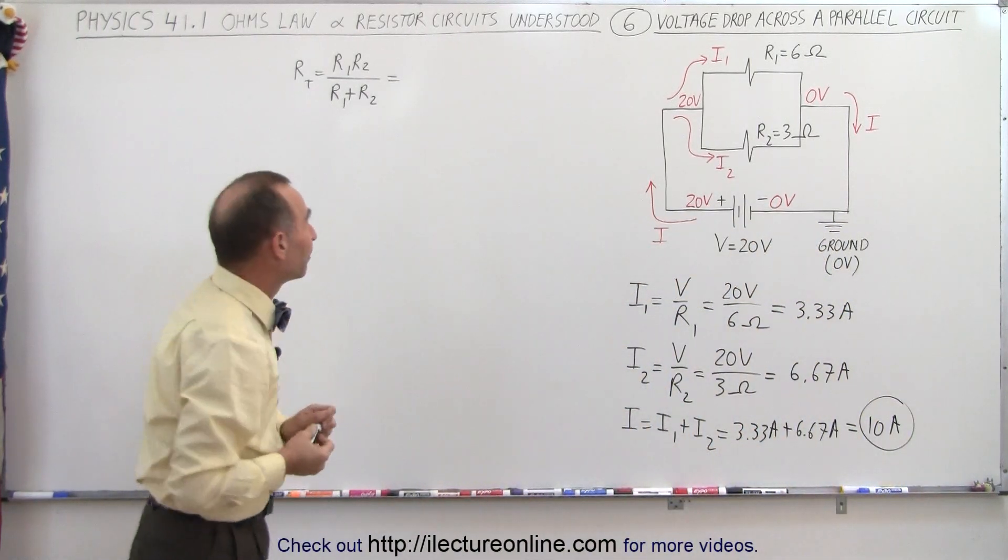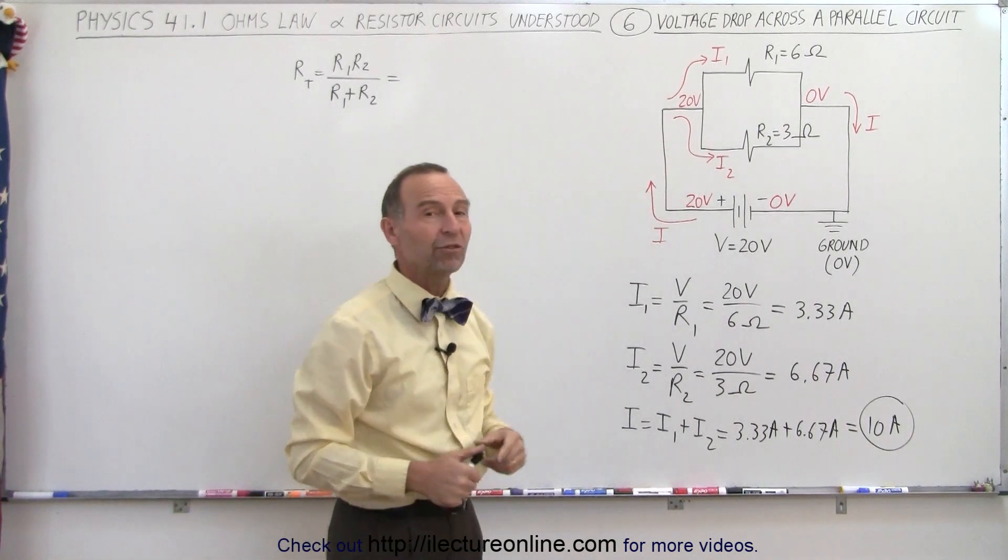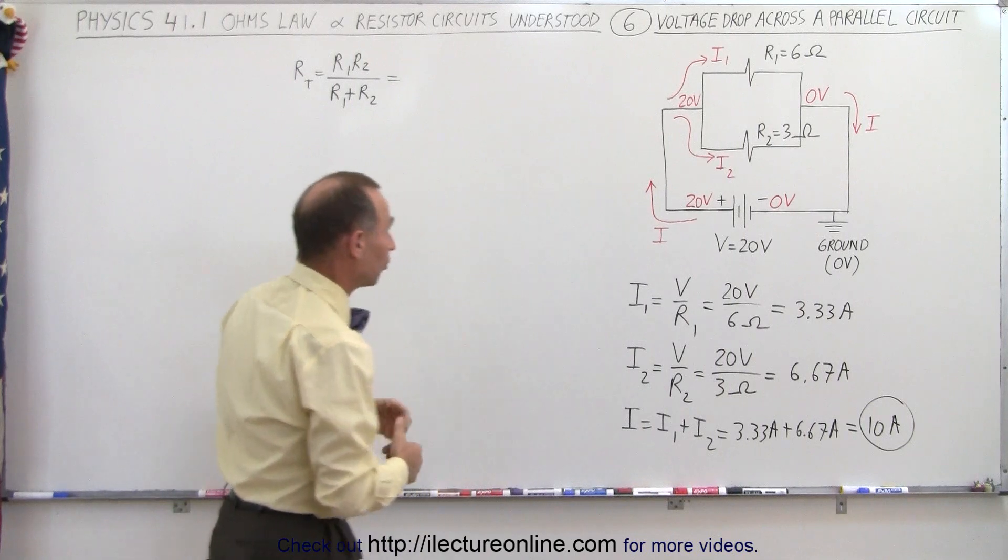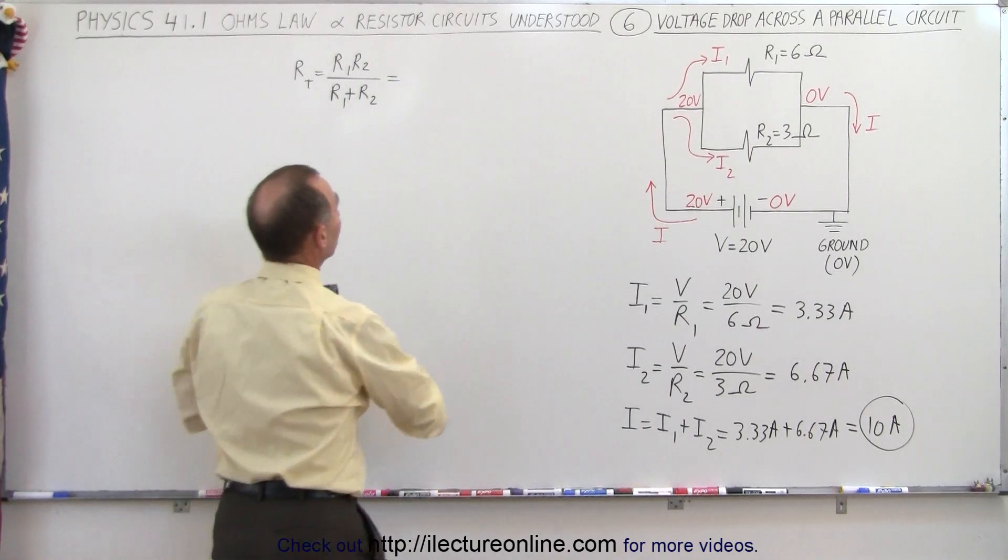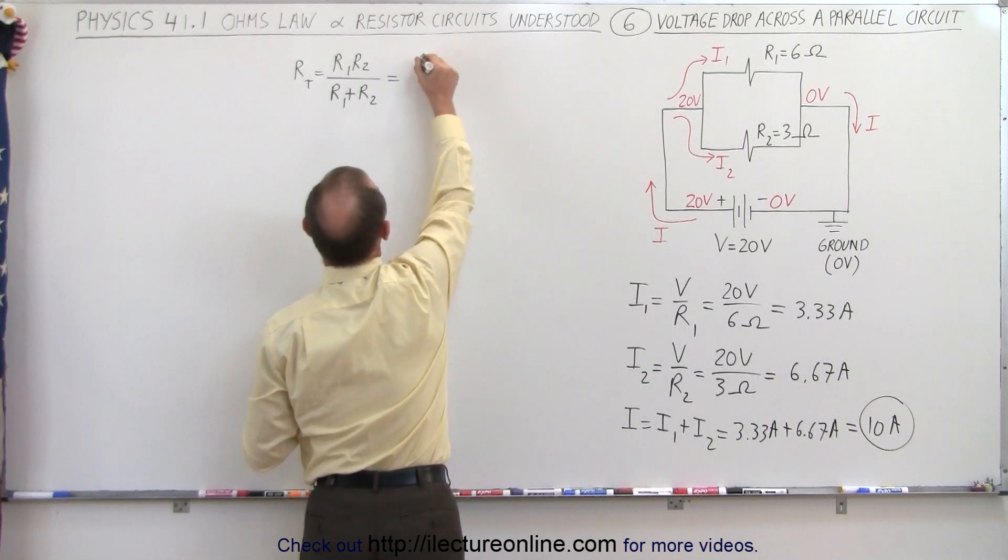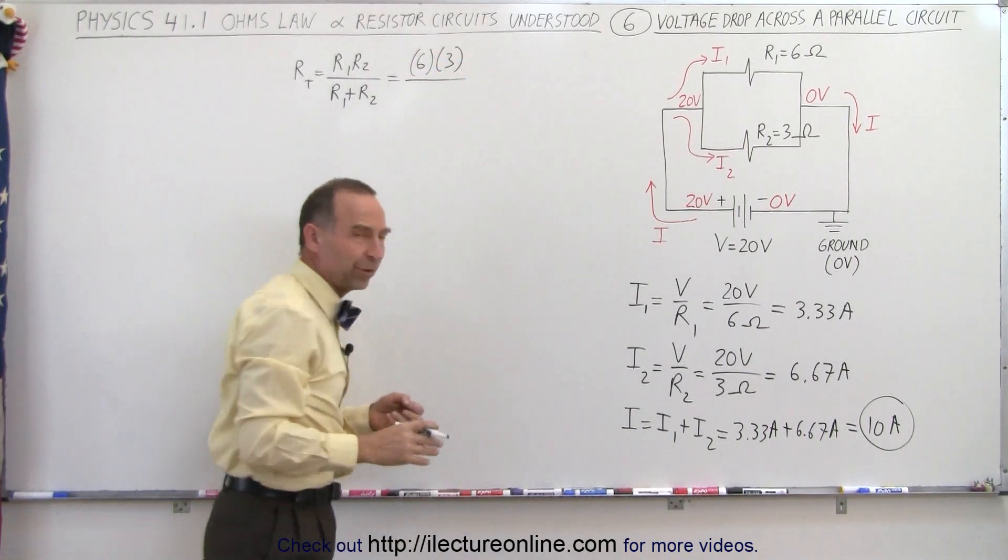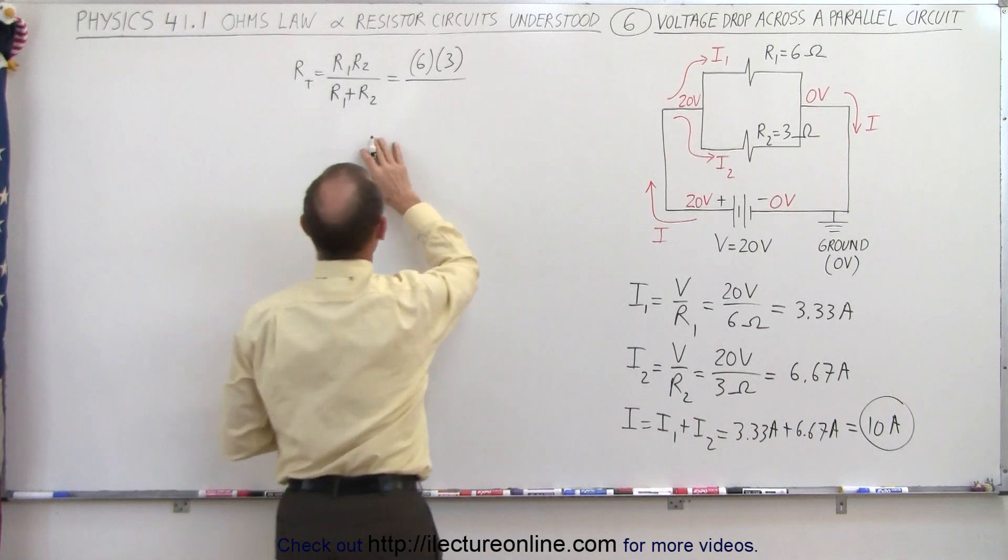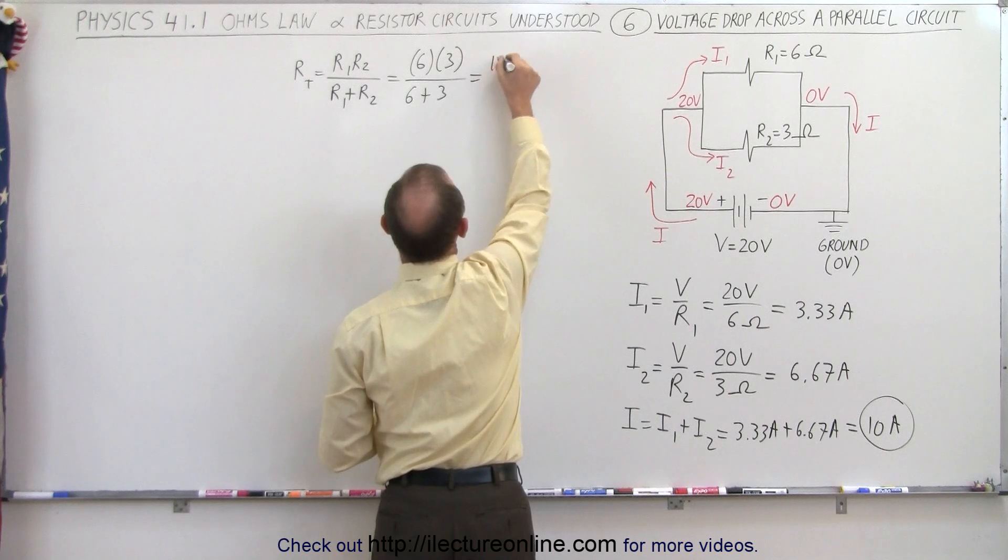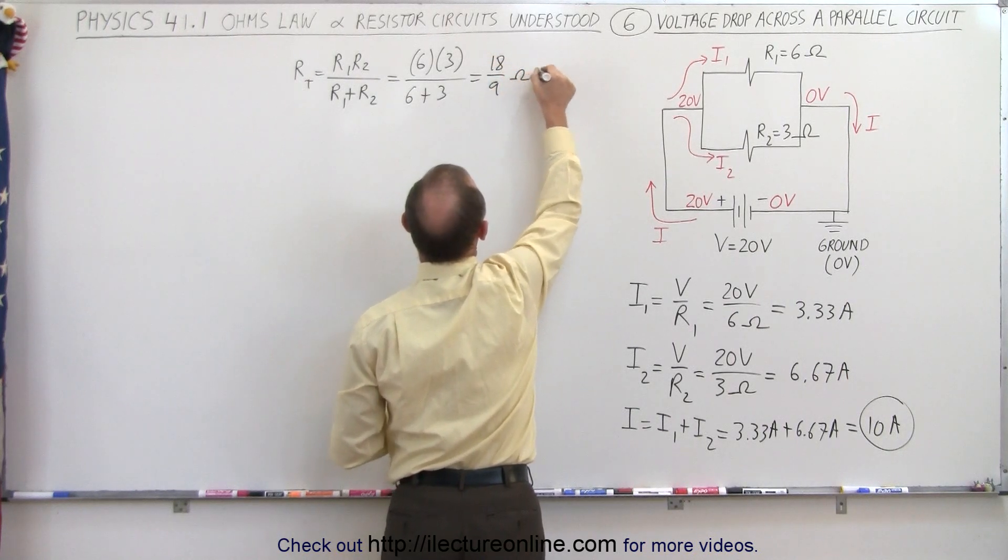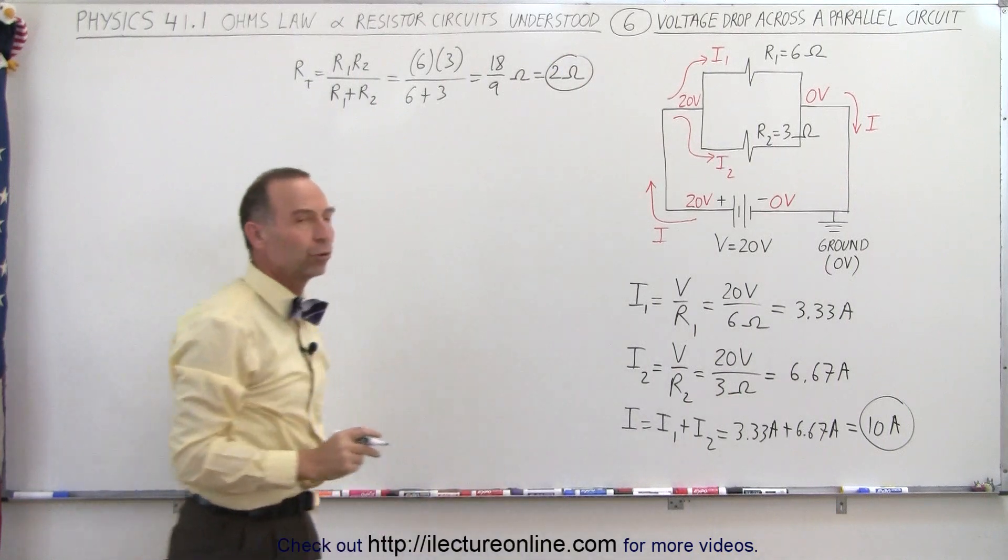All right, let's see if we can verify that. So what we're going to do here is find the equivalent resistance of those two resistors. Since there's only two and they're in parallel, we can use the product over the sum method. This is going to be equal to 6 times 3. Notice I'm not writing the ohm symbols to make it a little bit cleaner. And in the bottom, we have 6 plus 3, which is equal to 18 divided by 9 ohms, which is equal to 2 ohms. The equivalent resistance is equal to 2 ohms.